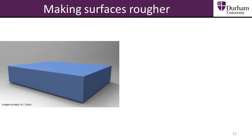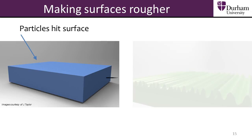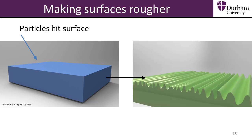We can increase surface roughness in a number of different ways. A common approach is to hit the surface with fast-moving particles. The particles hitting the surface will indent, scratch, and create increased roughness.